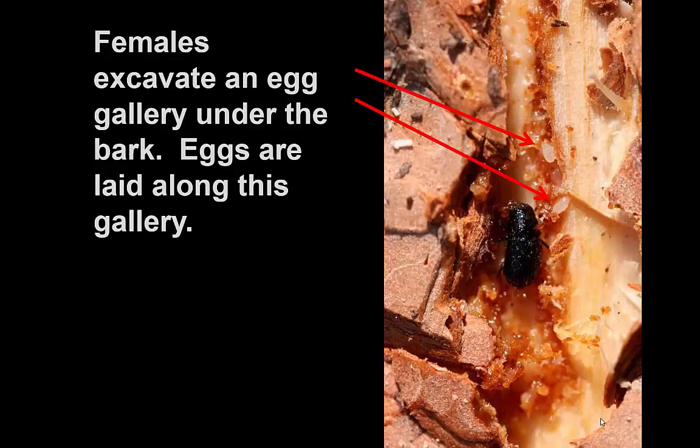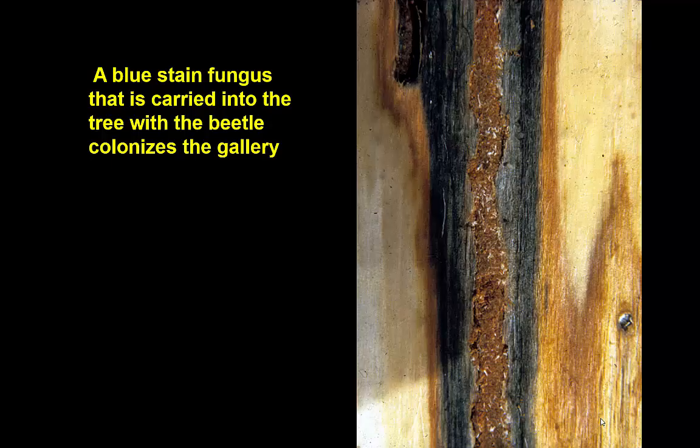Once the beetle has gotten underneath the bark, the female makes a gallery that runs along the grain of the tree, along which she lays eggs. Another thing that happens with these bark beetles — quite pronounced with mountain pine beetle and the other conifer-feeding beetles — is an association with fungi. With those that attack conifers, the fungi they bring in are what we call blue-stain fungi.